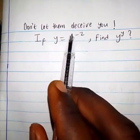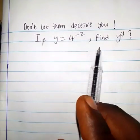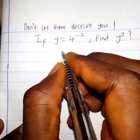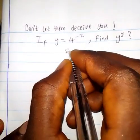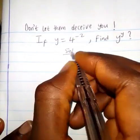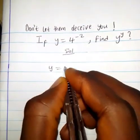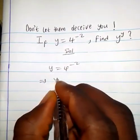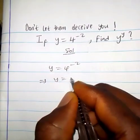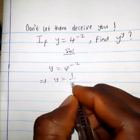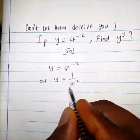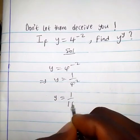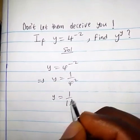If y equals 4 to the power minus 2, find y to the power y. Solution: we have y equals 4 to the power minus 2, which implies y equals 1 over 4 squared. That is 1 over 16.